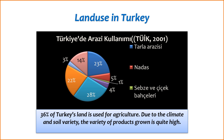7. Organic farming — Growing interest: there is a growing interest in organic farming in Turkey. Organic agriculture emphasizes sustainable practices, avoiding synthetic pesticides and fertilizers, and promoting soil health. Organic farms contribute to environmentally friendly and healthier food production.